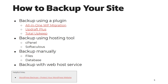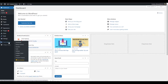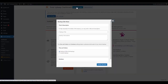How do you backup your site? There are several ways. One of the easiest ways is to use a backup plugin. Some examples of these are All-in-One WP Migration, UpdraftPlus, and Total Upkeep. These allow you to schedule and perform backups right from your dashboard. Here I am performing a backup of the files and database using Total Upkeep.